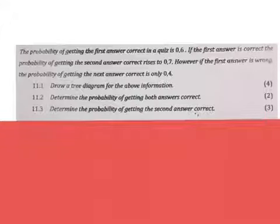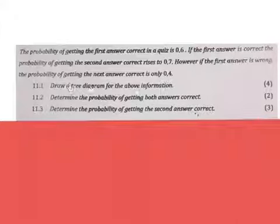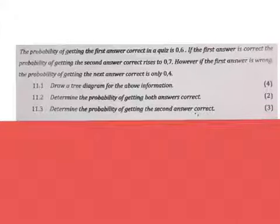The three things they're asking us: first, draw a tree diagram for the above information; determine the probability of getting both answers correct; and determine the probability of getting the second answer correct. You will see that the tree diagram helps us to find the answers to these two questions.